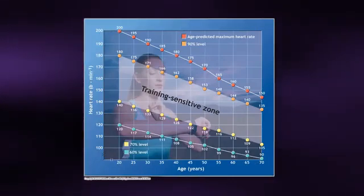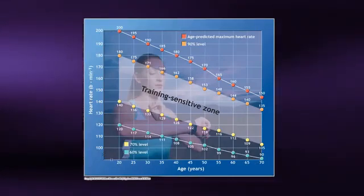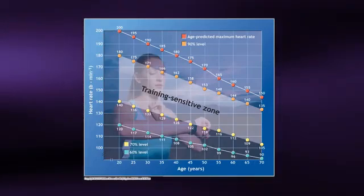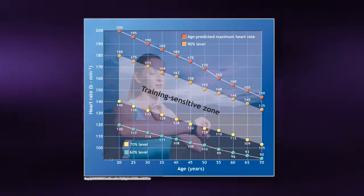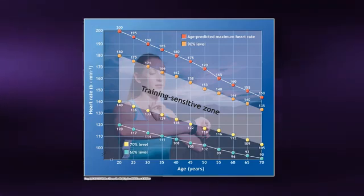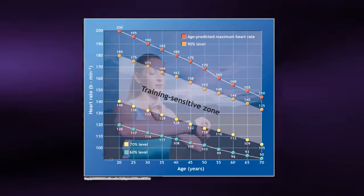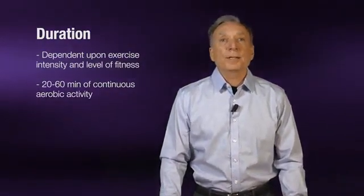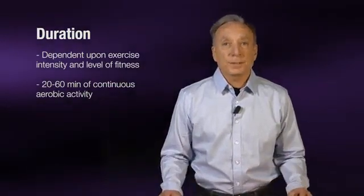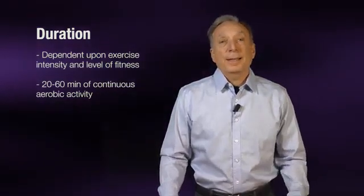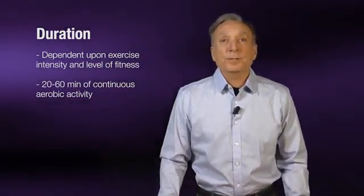Here is a typical heart rate chart you may have seen posted at your local health club or gym. In this example, a training sensitive zone between 70 and 90% of age-predicted maximum heart rate is highlighted. While maximum heart rate does decline with age, it varies greatly among individuals, so it is best to accurately determine exactly what yours is. The duration of the exercise session also has a range that is dependent upon both the exercise intensity as well as your current fitness level. A minimum of 20 minutes per session is recommended, and as you become more fit, you can increase the duration accordingly.